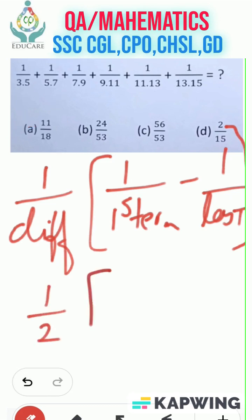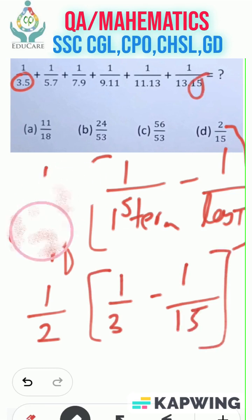Now we will solve this. 1 by 2, and the first term is 3, 1 by 3. What is the last term? Last term will be 1 by 15. If we solve this, we will get our right answer.